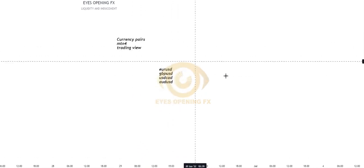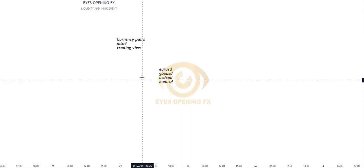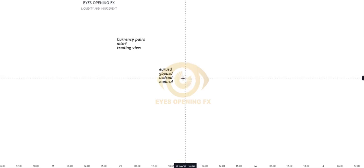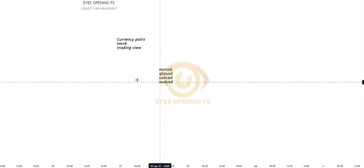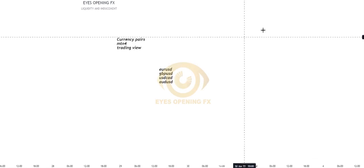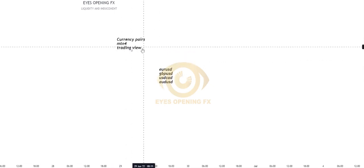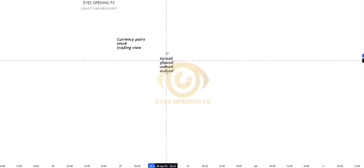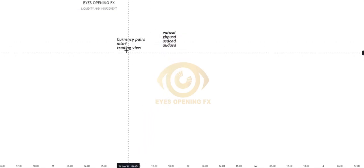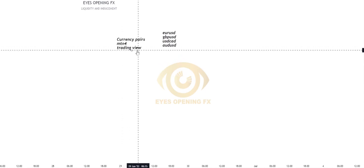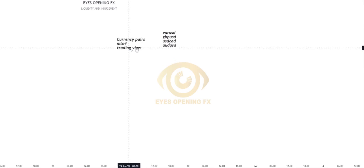EUR is a currency, USD is a currency, GBP is a currency, USD/CAD — here CAD is a currency, AUD is a currency which is the Aussie, and USD is also a currency. So we are pairing them together — that means two currencies paired. Because we are pairing them together, that's why you can actually trade them. If it's only one we can't trade it — it must be two. We also have the Japanese yen.